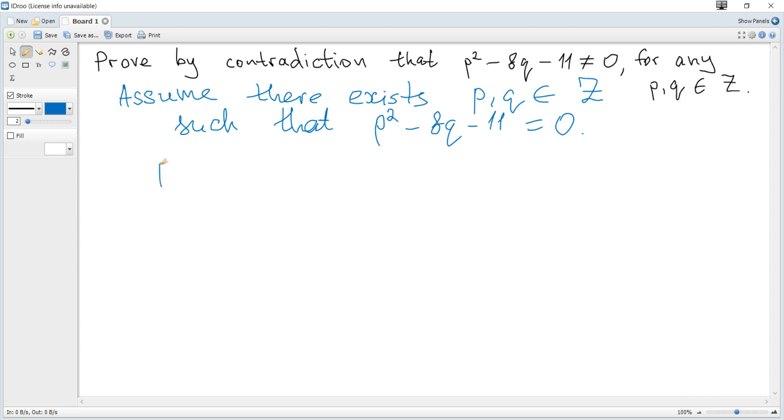Let's consider it in the form P² = 8Q + 11. Just move these terms to the right. Usually all integers can be considered in terms of even and odd numbers. We remember that any even can be represented as 2K, any odd as 2K + 1.